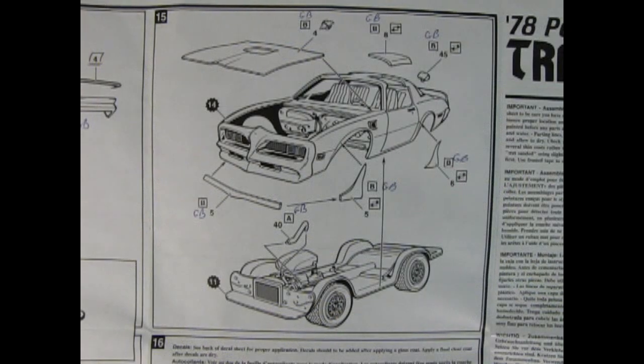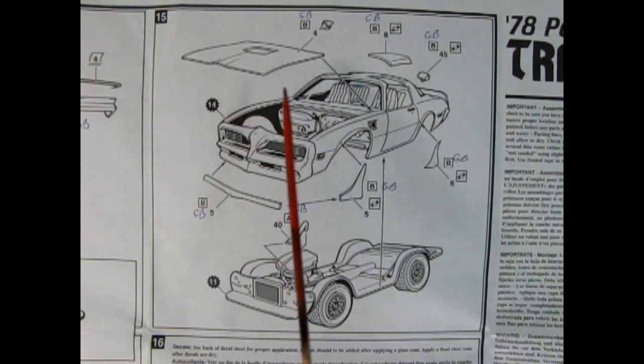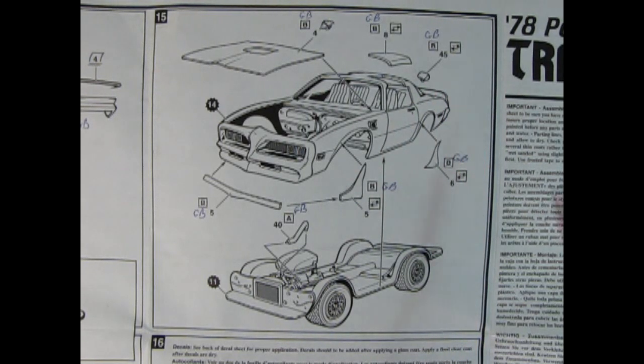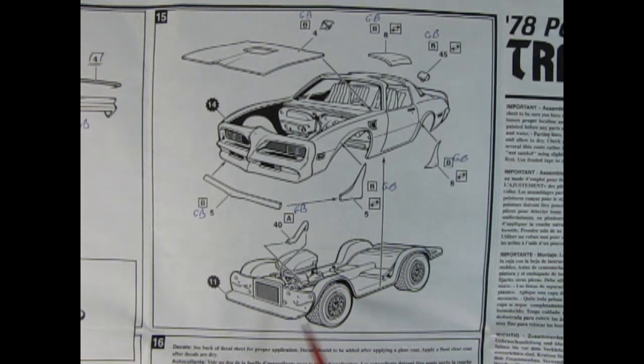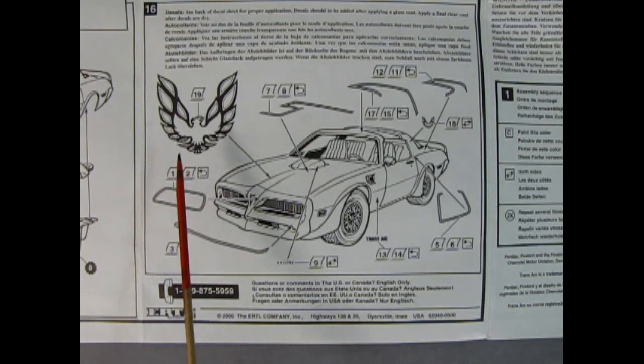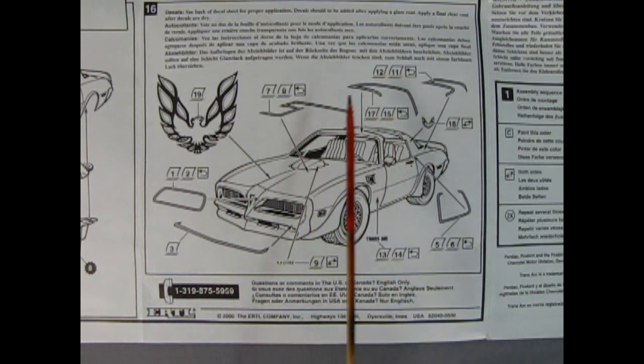In panel 15 we glue on the front fairings around the wheel openings as well as this little chin spoiler in the front. Here we have our hood going on in place as well as the t-tops and our side mirrors. All this will drop onto our chassis and then we have an upper radiator hose which attaches the engine to our radiator.